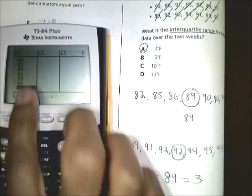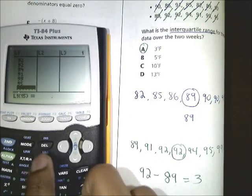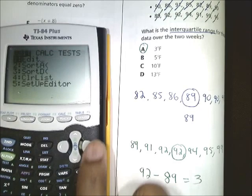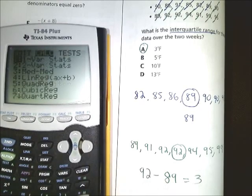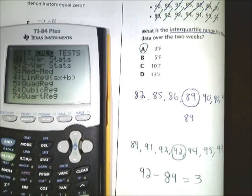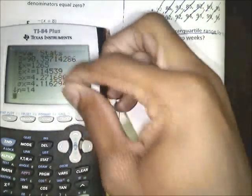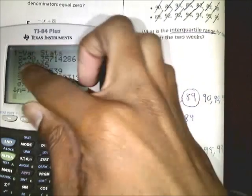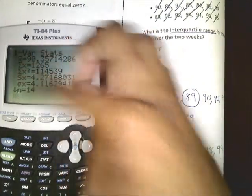Okay, so now that you have all of your values entered under this first column under your L1, you now just have to press stat again. Slide over to calculate and you're going to look for option number one, which is first variable stats. Press enter, enter, and it's going to give you this whole table of values and all these Greek symbols.